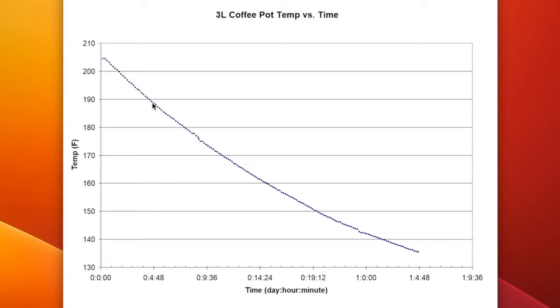If you want to brew tea, you want to dispense the water within the first four hours or so, so that it's still hot enough to brew it. But if you're dispensing coffee, you can probably drop all the way down to 150 or even 140 degrees, and this would still be considered hot, which is one full day later.